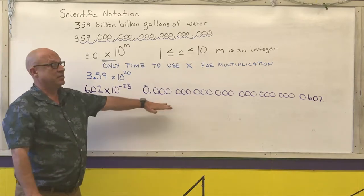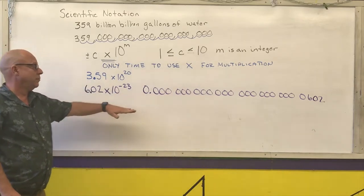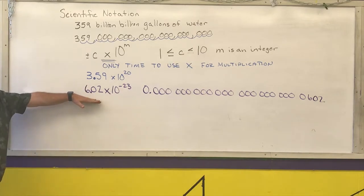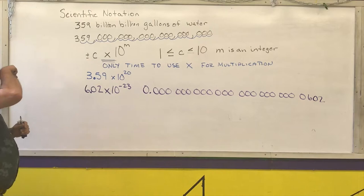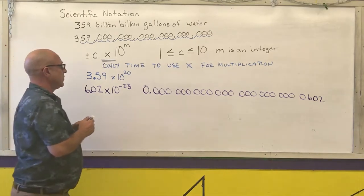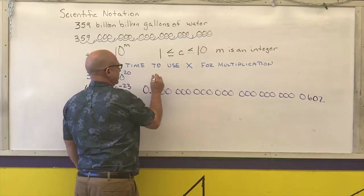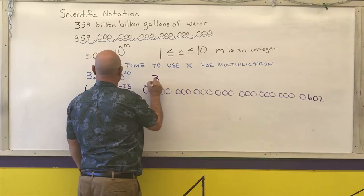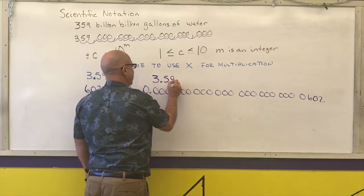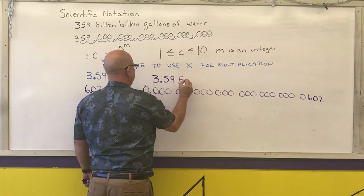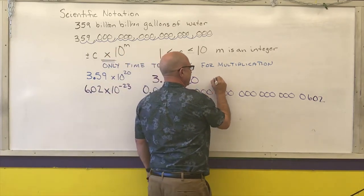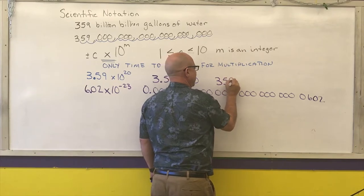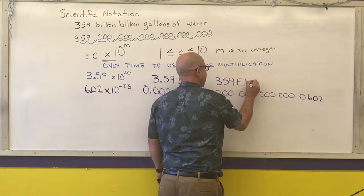I will tell you right now, your calculator cannot take that many digits. Your calculator can work with something written like this. Your calculator, depending upon what setting you have it in, may write this as 3.59E20. It also may write this as 359E to the 18th.